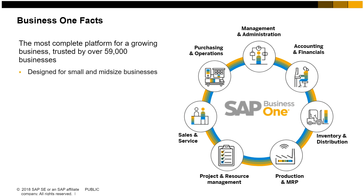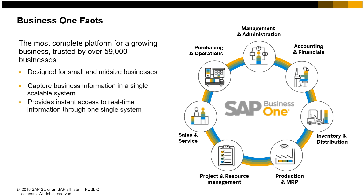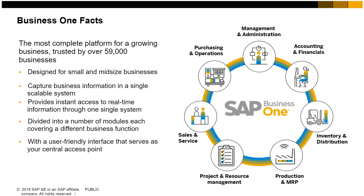SAP Business One is a business management solution designed for small and mid-size businesses. It allows you to capture business information in a single scalable system, giving you instant access to real-time information through one single system. The application is divided into a number of modules, each covering a different business function. SAP Business One has a user-friendly interface that serves as your central access point.